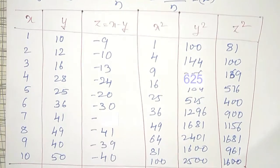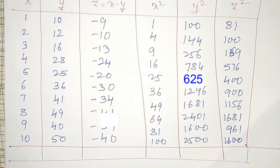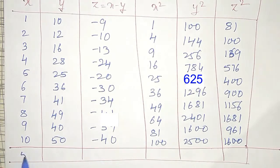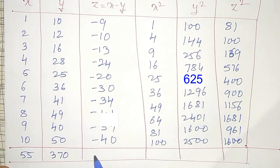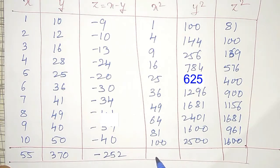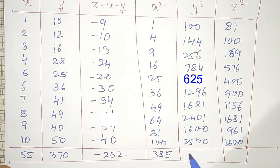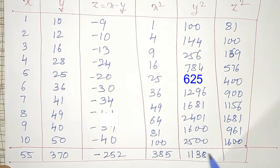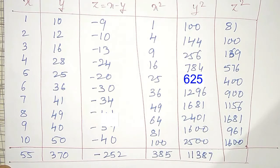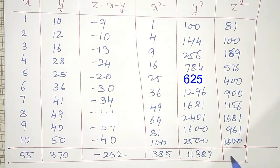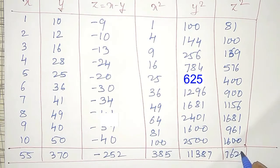The summations of all columns: Σx = 55, Σy = 370, Σz = −252. Summation of x² is 385, summation of y² is 11387, and summation of z² is 7624.